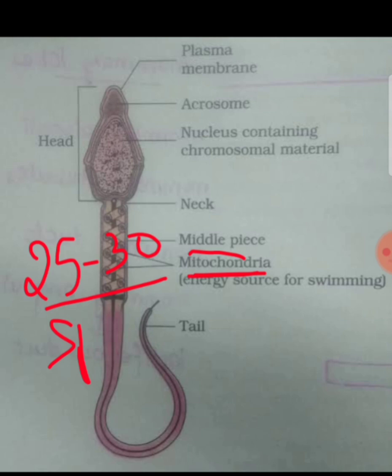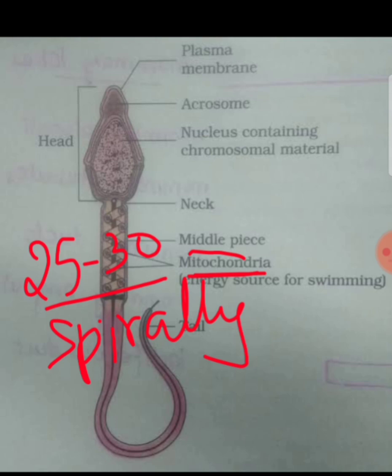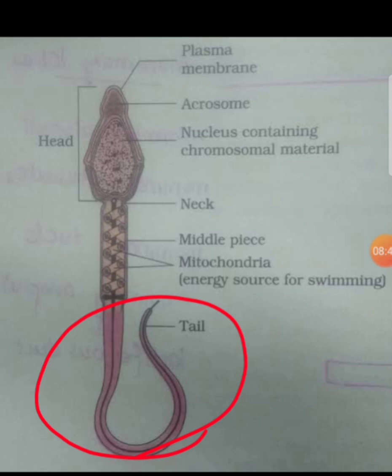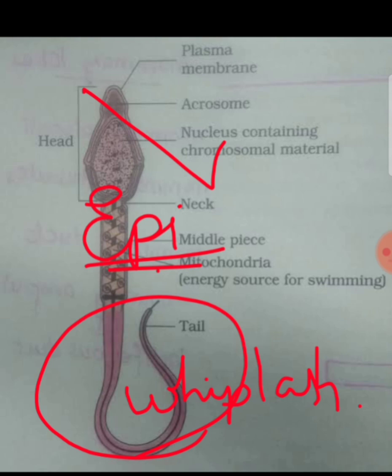The mitochondria in the middle piece are arranged spirally, which is why it is called the nebenkern. Remember that in the human sperm, the tail is the largest part and it shows whiplash movement. Also remember that sperms attain motility in the epididymis after reaching the epididymis.